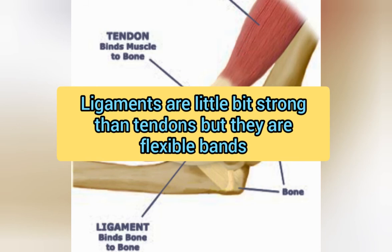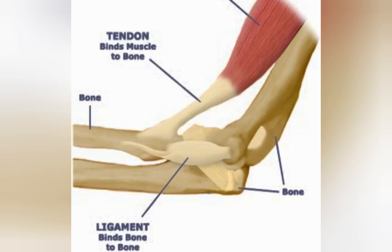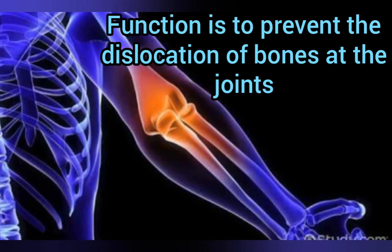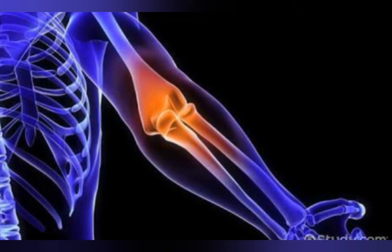Ligaments are slightly stronger than tendons but are flexible bands. They are joined to the bones at the joints — for example, in between our fingers there are joints. The function of ligaments is to prevent the dislocation of bones at the joints.